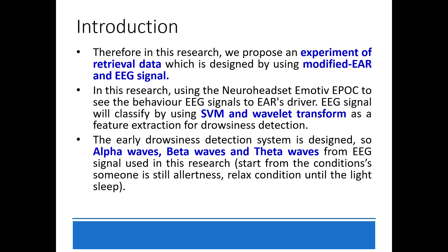The early drowsiness detection system is designed so that alpha wave, beta wave, and theta wave from the EEG signal are used in this research.